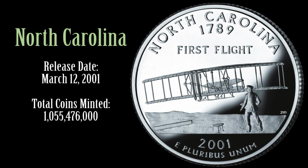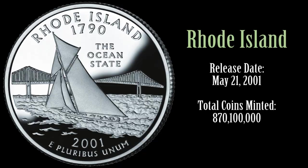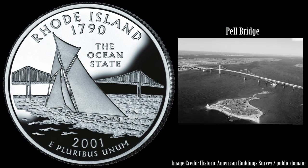North Carolina's Quarter features the Wright Brothers' Wright Flyer and Kitty Hawk mid-flight on December 17, 1903. This was the first successful heavier-than-air powered aircraft, and the text reads First Flight. Rhode Island's Quarter features the 1903 America's Cup racing yacht Reliance on Narragansett Bay. Pell Bridge and Newport Bridge, opened in 1969, appears in the background. The nickname of the Ocean State appears above.